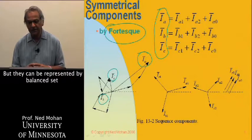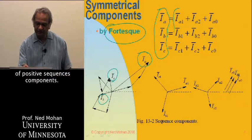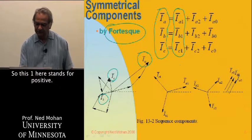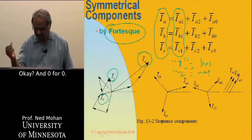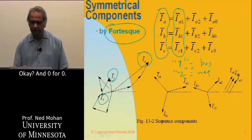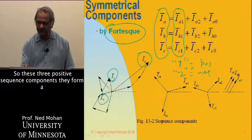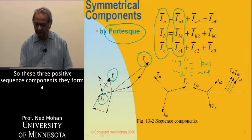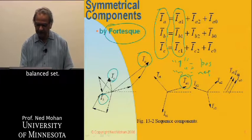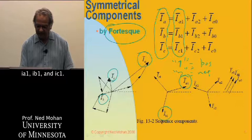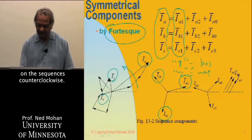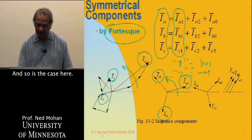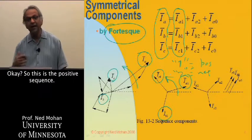But they can be represented by means of balanced set of positive sequence components. This one here stands for positive, two stands for negative, and zero for zero. These three positive sequence components form a balanced set: Ia1, Ib1, and Ic1. These phases are always taken to be rotating or the sequences counterclockwise. So this is the positive sequence.